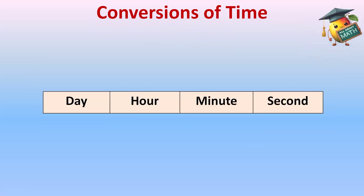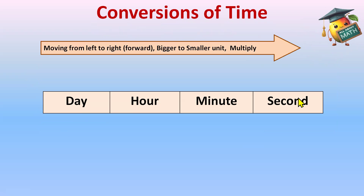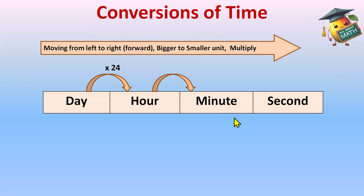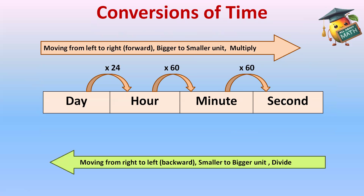Let's write the table: Day, Hour, Minute, Second. Moving from left to right — that is forward, from a bigger unit to a smaller unit — we multiply. So Day to Hour: multiply by 24, since one day equals 24 hours. One hour equals 60 minutes, so multiply by 60. One minute equals 60 seconds, so multiply by 60 again.